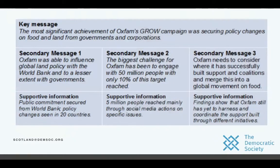Here's an example taken from the internet — a key message from Oxfam. Their key message is: 'The most significant achievement of Oxfam's Grow campaign was securing policy changes on food and land from governments.' Then they have secondary message one, secondary message two, secondary message three, and then supportive information underneath to back it up for people who've picked up on the key message and want to read more. You always want one sentence that tells people exactly what you're trying to do.